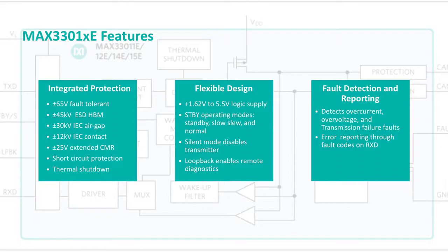Other features of this family of transceivers are plus minus 65 volt fault protection on CAN H and CAN L, plus minus 25 volts of wide common mode range and high ESD of plus minus 45 kV. Now let's look at the demo.